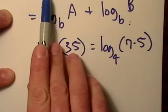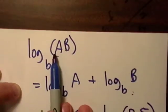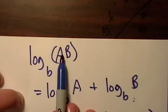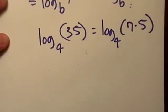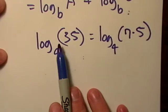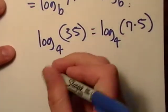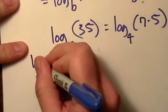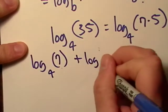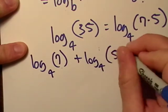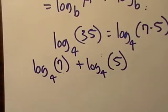Here's my product rule up here, and it says that I can go log a plus log b if I do that. So let me go ahead and do that right here. I took 35, I just broke it down, and now there's really nothing more we can do with this. This is as simple as it gets.